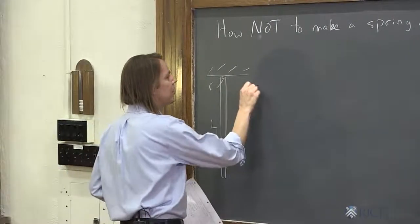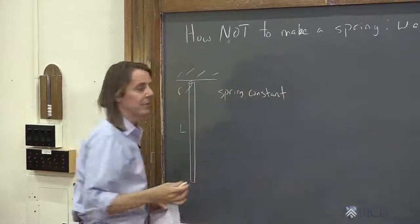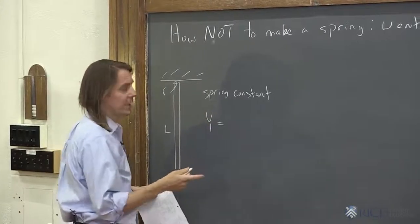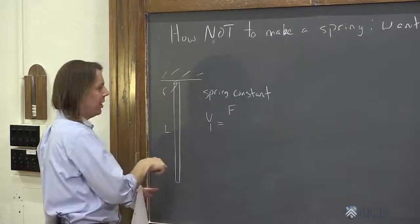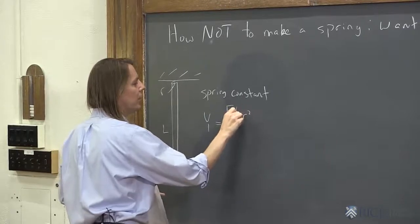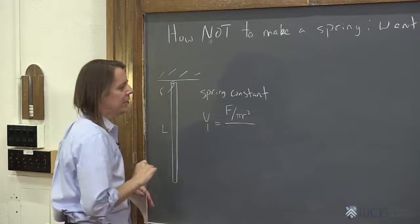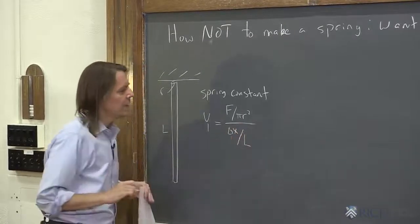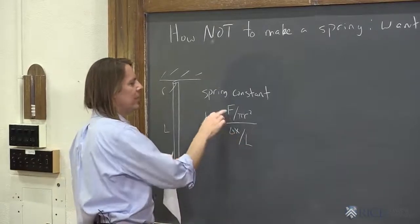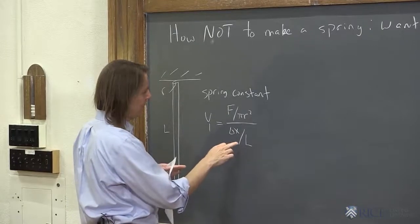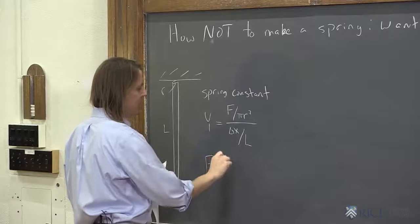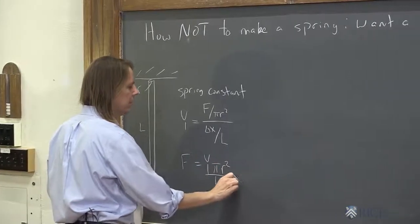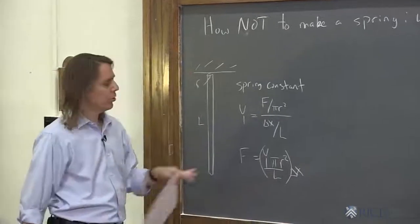Let's think about what we would have to do to get these properties. For the spring constant, we can derive it from the definition of the Young's modulus. We know we can look up the Young's modulus of copper, and it's the stress over the strain. So the stress was the force per unit area of the wire, pi r squared, divided by the strain, that's delta x over the total length L. So if we want to think of this as a spring constant, we just need to rewrite this where F is some constant times delta x. You've got the Young's modulus times pi r squared over L times delta x. So this must be your spring constant.